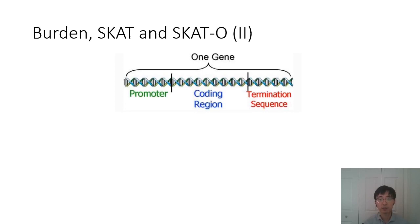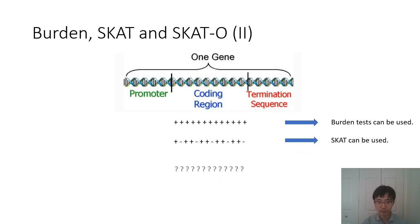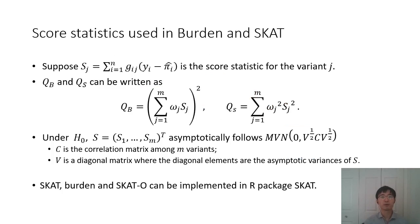The rho parameter is a tuning parameter with a range from 0 to 1. Here is a figure showing when we should use SKAT, Burden, or SKAT-O. For example, if we know the directions of all variants are the same in the coding region, then we can do Burden tests. However, if the directions can be different — for example, plus, minus, plus, plus, minus — then we can use SKAT. If we don't know the directions of variants in this gene, probably we should use SKAT-O to achieve the best power.